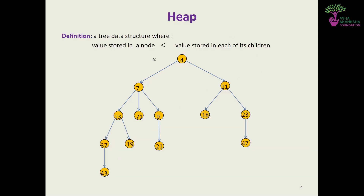The definition of a heap is that a parent node has a value which is less than its children — or the opposite. In this case, the value stored in a node is less than the value stored in each of its children. For example, 4 is less than 7 and 11. Unlike binary search trees where a node is greater than the left child and less than the right, here the node must be less than both children. This is called a min heap because the root node is the minimum.